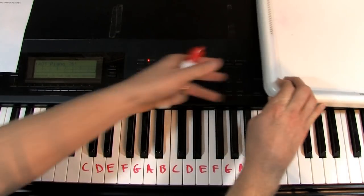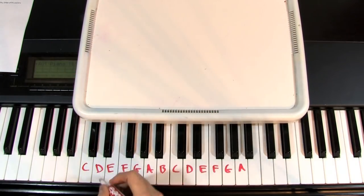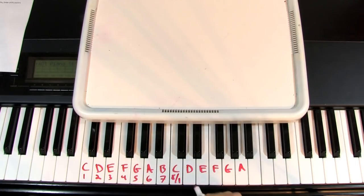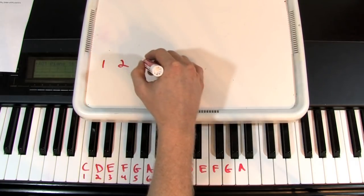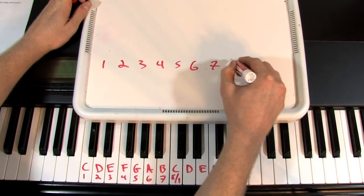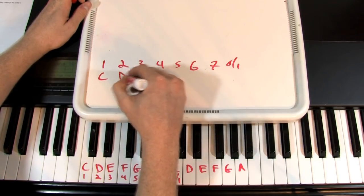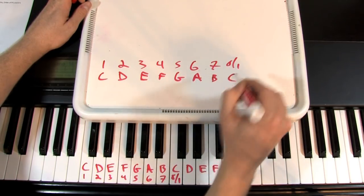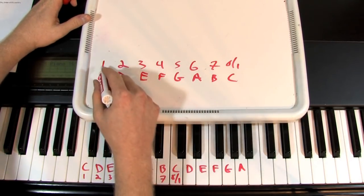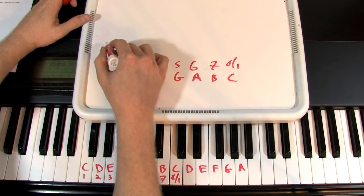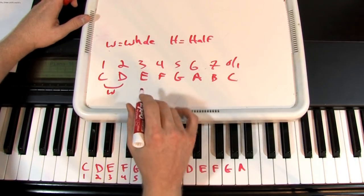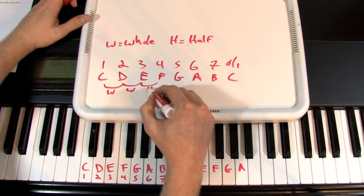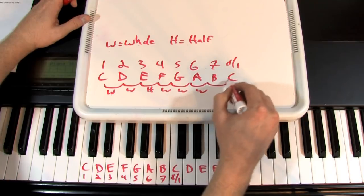Let's take the key of C. We're going to number the notes 1, 2, 3, 4, 5, 6, 7, and 8 — or 1 again — because sometimes we think of it as an octave, sometimes as starting over. The letter names are C, D, E, F, G, A, B, C. This is a formula of whole steps and half steps. From 1 to 2 is a whole step, then whole, half, whole, whole, whole, and a half step back to 8 or 1. So the formula is: whole, whole, half, whole, whole, whole, half.